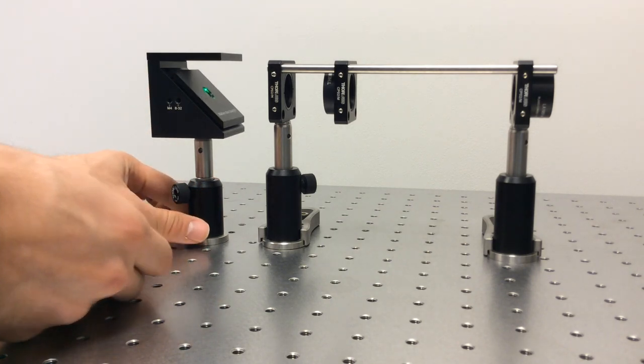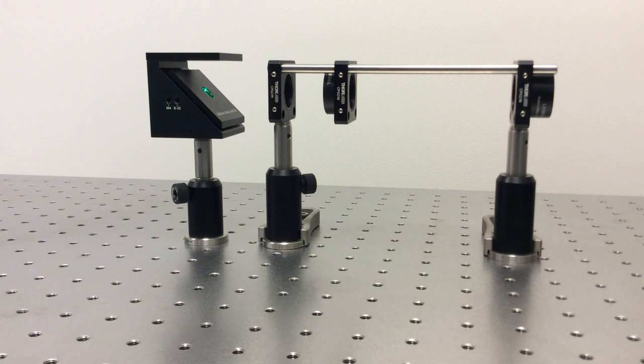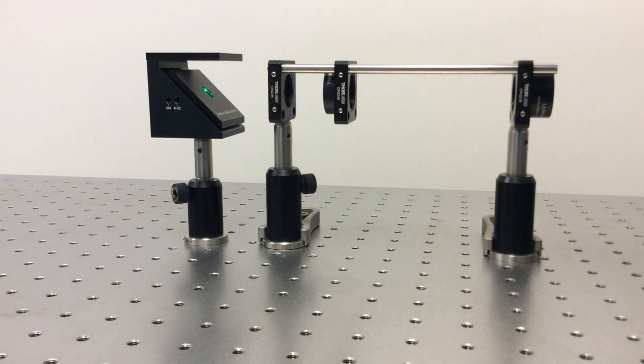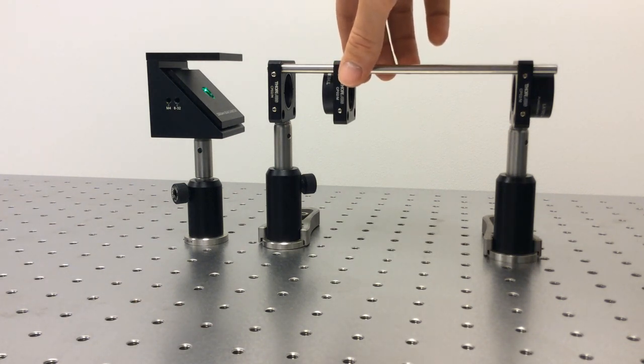And as a side note, make sure the shear plate matches your expected beam diameter. Untilting the fringes by moving the second lens is then a piece of cake.